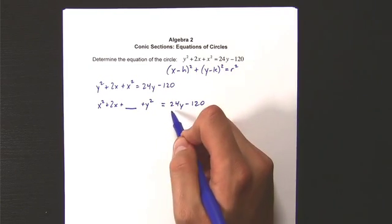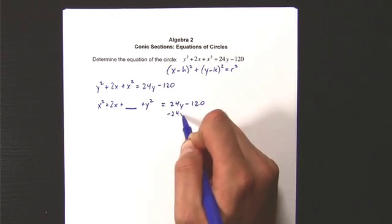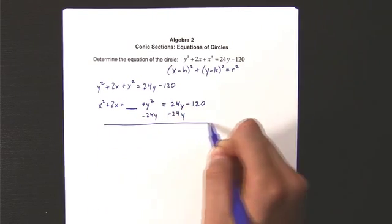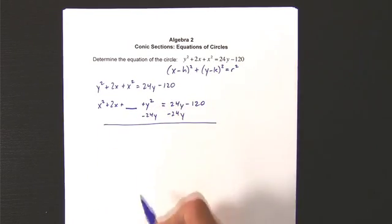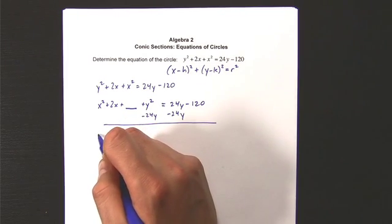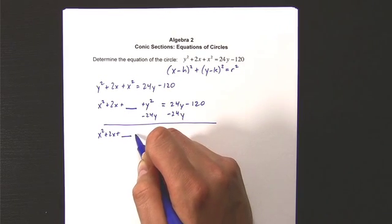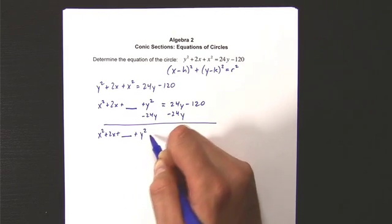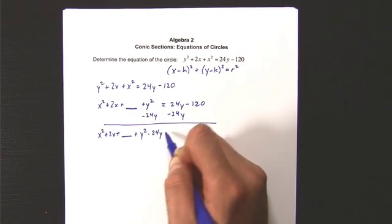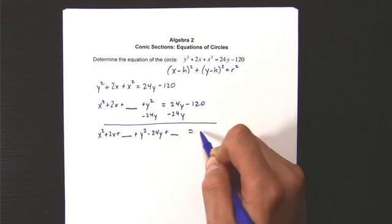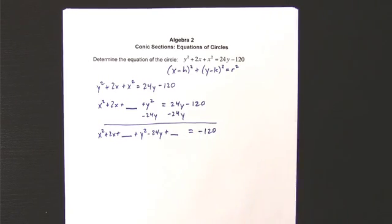I'm going to move this 24y over here because it doesn't really belong on this side. It belongs with the other y's over there. So this becomes x squared plus 2x plus something. And then I have y squared minus 24y plus something and that equals negative 120.